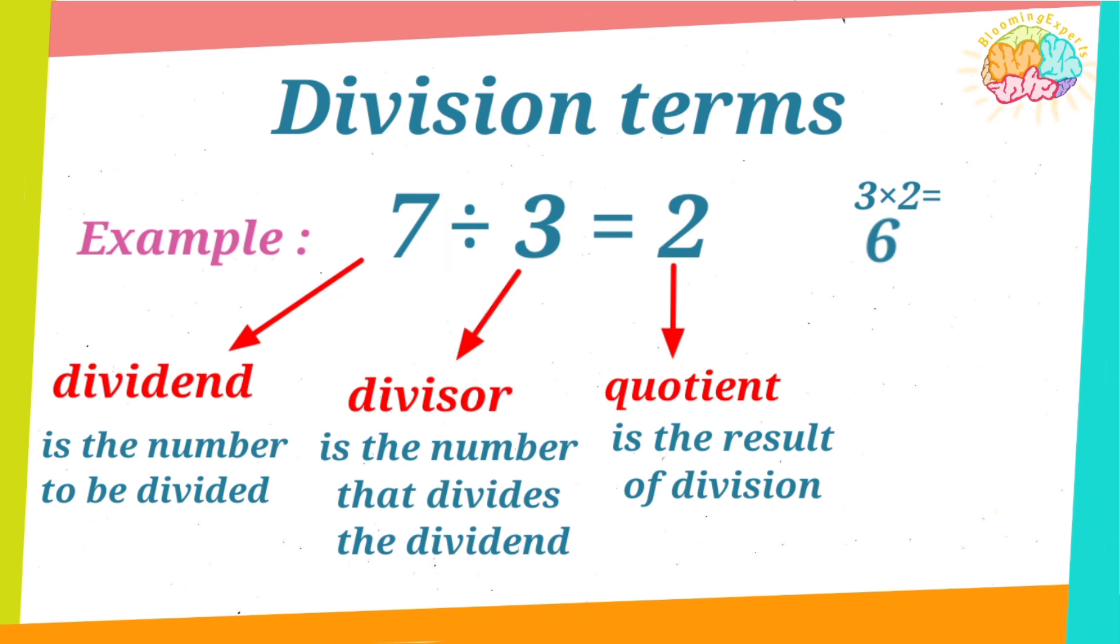Here, we have to subtract the 6 from the dividend. So, 7 minus 6 is 1. This 1 is called the remainder, which is the remaining number.